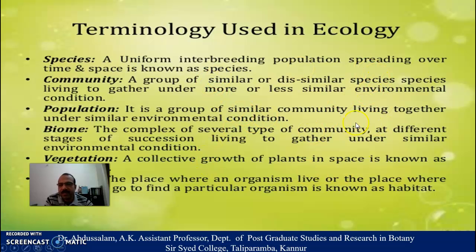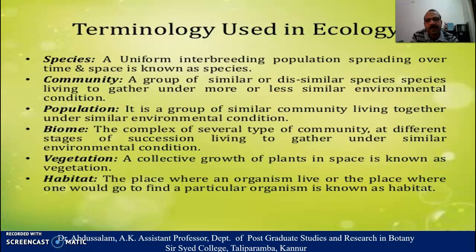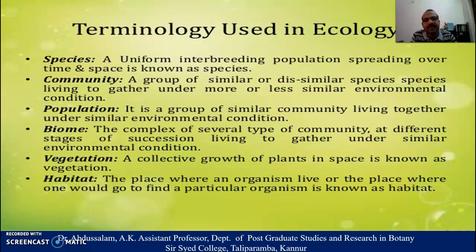The most common terminologies used in ecology are: species, community, population, biome, vegetation, and habitat. What is a species? It is a uniform, interbreeding population spreading over time and space, known as a species. What is a community? A group of similar or dissimilar species living together under more or less similar environmental conditions is called a community.